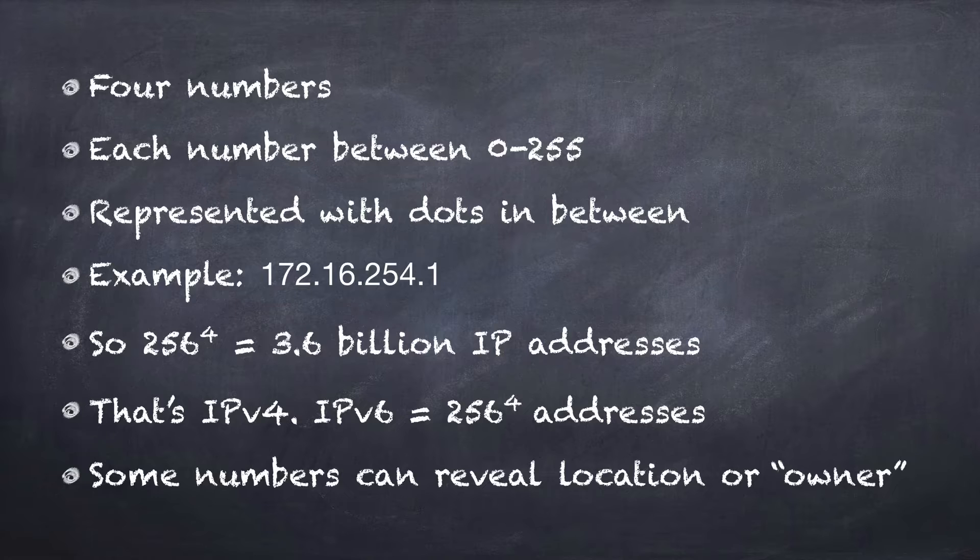Now an IP address is basically four numbers. Those numbers are from zero to 255. So you might see a number like 172.16.254.1. Each of those four numbers is a number between zero and 255. So the combinations are 256 to the fourth or 3.6 billion IP addresses.